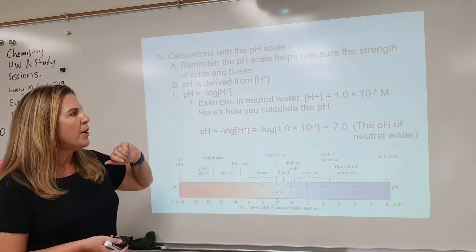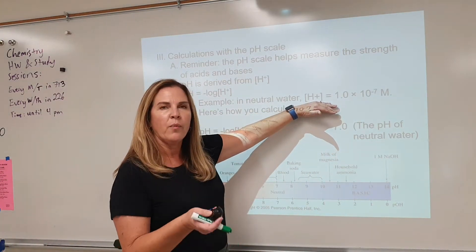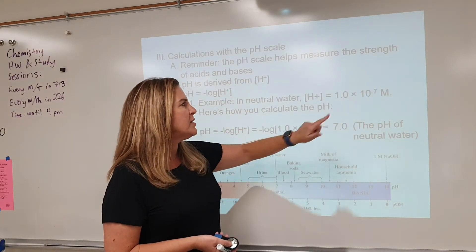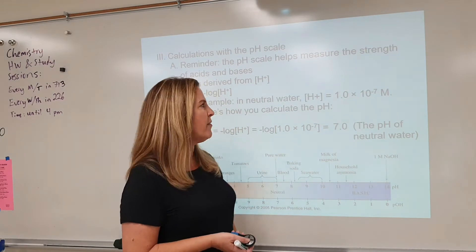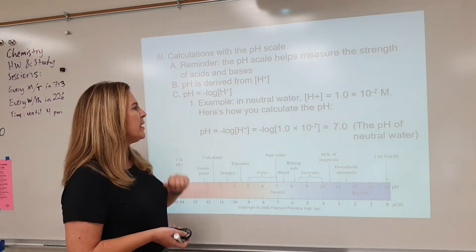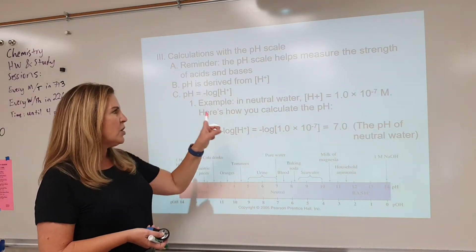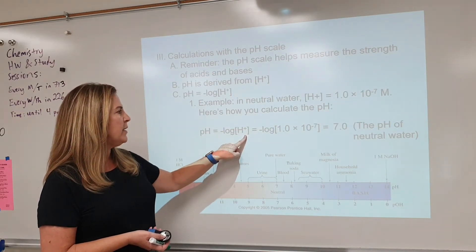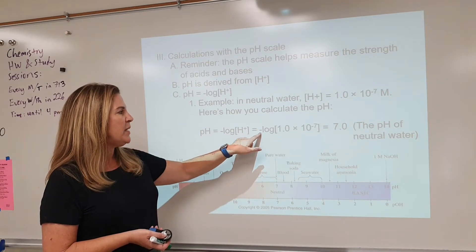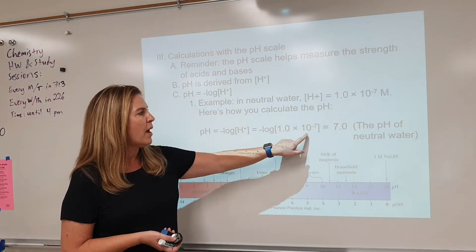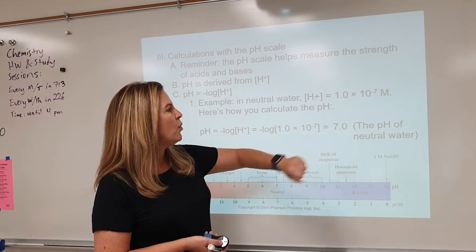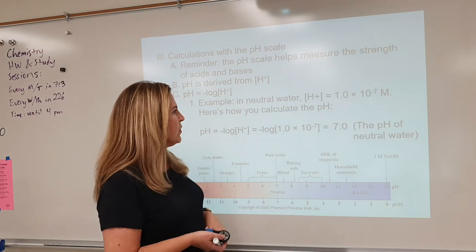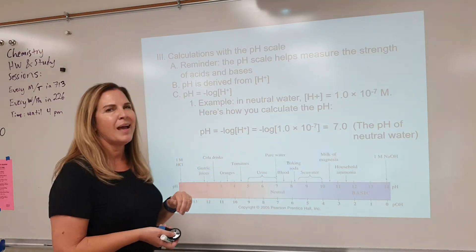In neutral water, the hydrogen ion concentration is 1 times 10 to the minus 7. Here's how you can calculate the pH: pH equals the negative log of 1.0 times 10 to the minus 7, which comes out to be a pH of exactly 7.